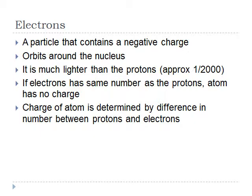An electron is a particle that contains a negative charge. It essentially orbits around the nucleus of the atom and it is much lighter than the protons, approximately one two-thousandth of the size. And if electrons has the same number as the protons, the atom has no charge. This is because each electron is of a negative one charge, whereas each proton is a positive one charge. Charge of an atom is therefore determined by the difference in number between the protons and the electrons.